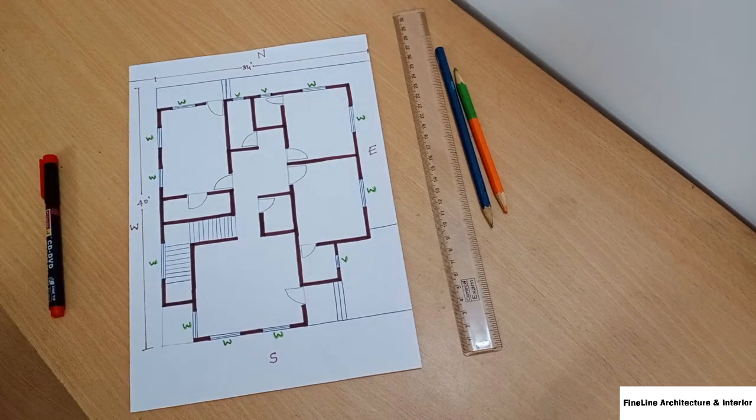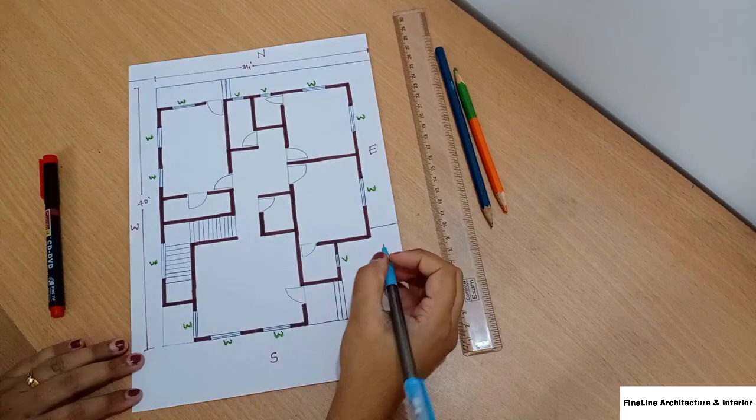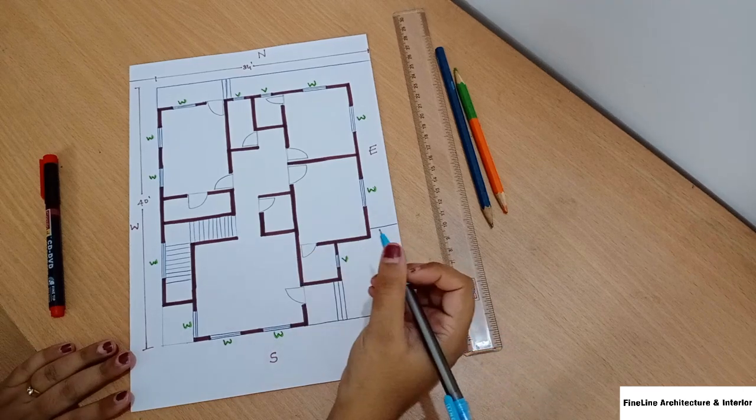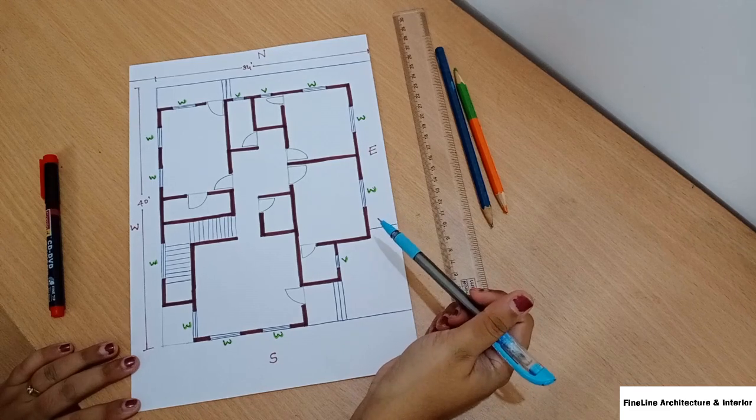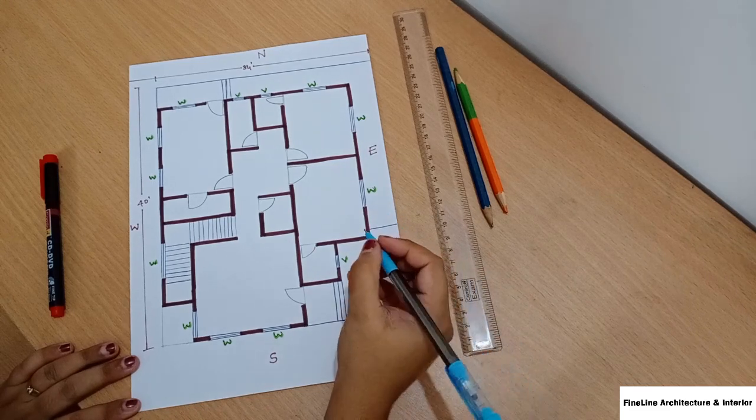Today's plan is very spacious. It is 2BHK. We are going to tell you how to use garden space in a plot. Let's start.